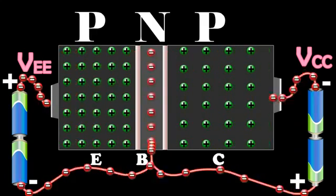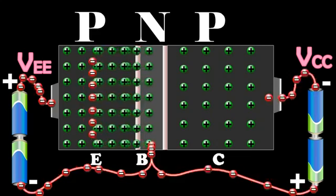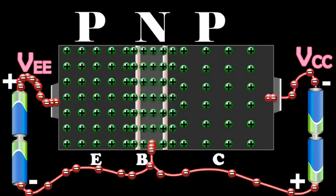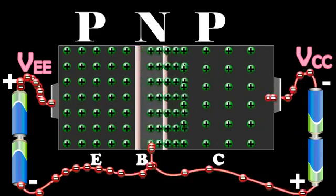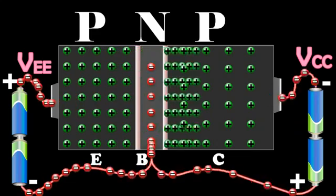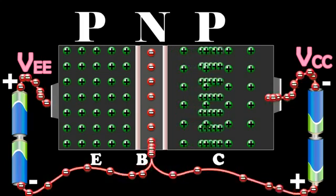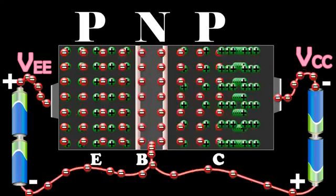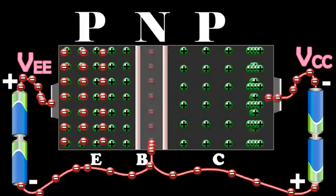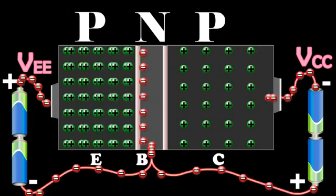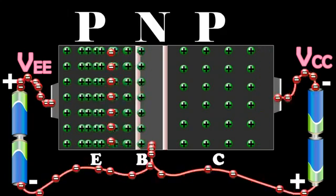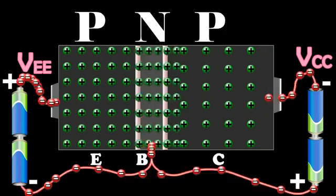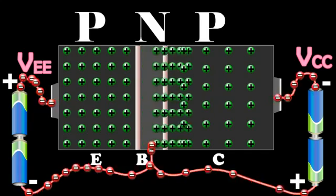These electrons, when they reach the emitter, recombine with an equal number of holes in the emitter. The loss of the total number of holes in the emitter is made up by the flow of an equal number of electrons from the emitter to the positive terminal of the battery.